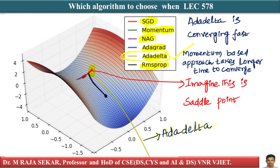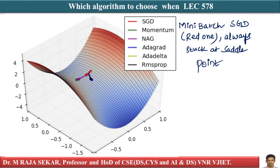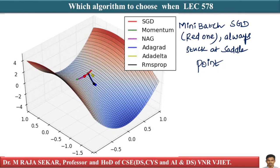But if you take simple mini-batch SGD — the red line — it is always stuck there. It's not able to come out of the saddle point problem. So the big advantage of momentum-based techniques is also getting rid of or avoiding the issue of getting stuck at saddle points. Most algorithms except mini-batch SGD can avoid getting stuck at local optima or saddle points.